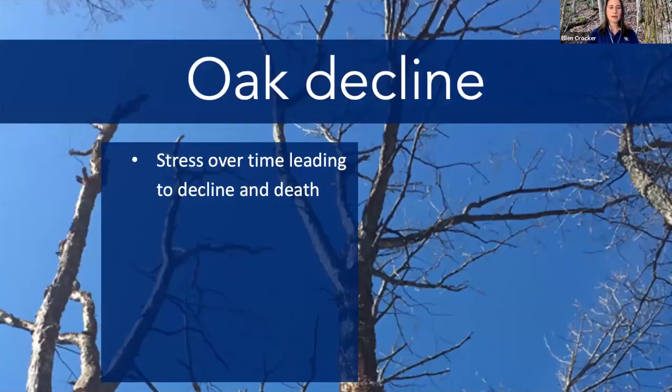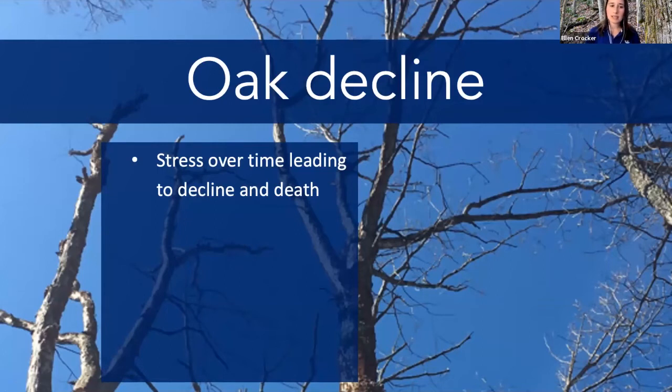Weather conditions are key with anthracnose — you can get boom years if the weather is conducive, like those cool wet springs. On some hosts it's worse. I just showed sycamore, which can be very impacted by anthracnose, and I am seeing more and more sycamore that seems like it's been killed by anthracnose. Dogwood is another one with multiple different types — there's spot anthracnose that can just create some little issues, and there's anthracnose that can move into the shoots and cause death of entire trees. Most of the time when I think of anthracnose, I think of minor foliar issues that will look terrible and then resolve themselves.